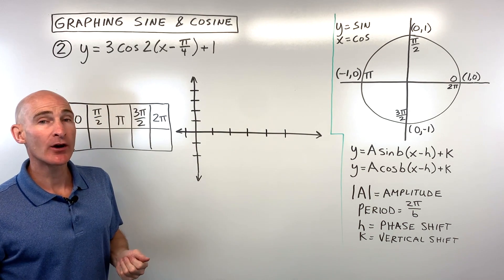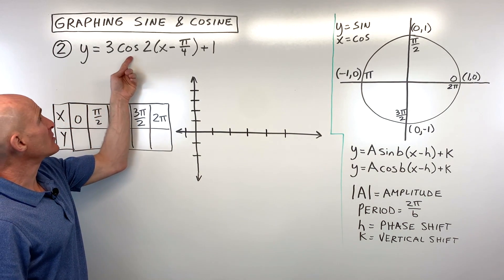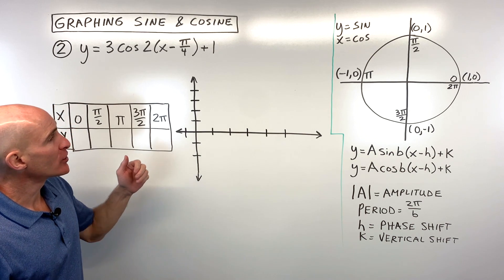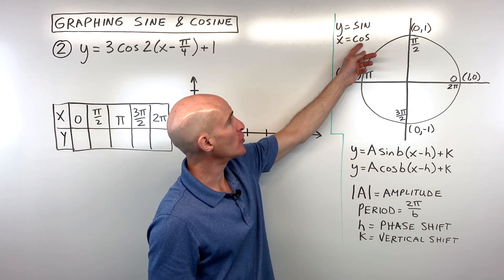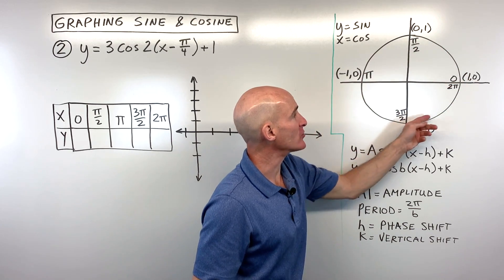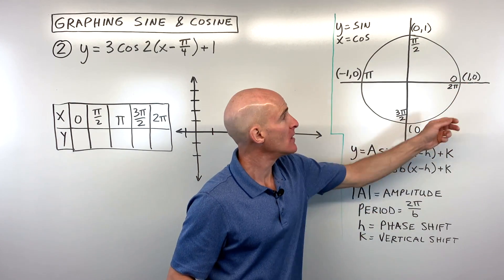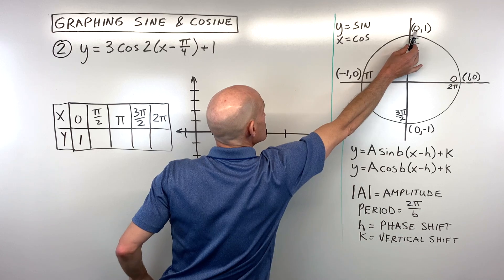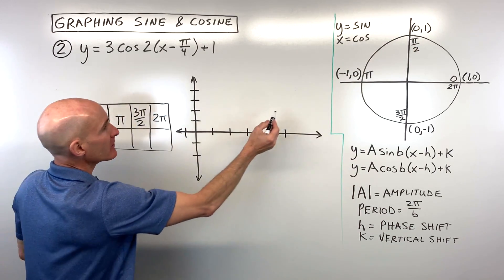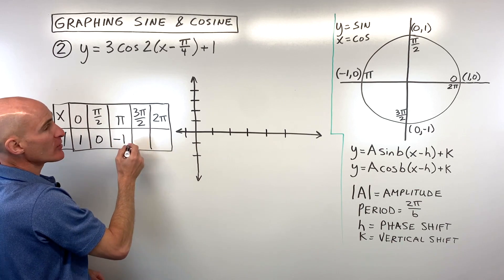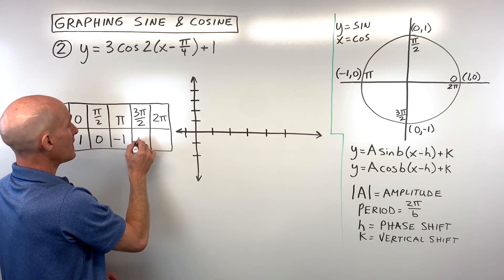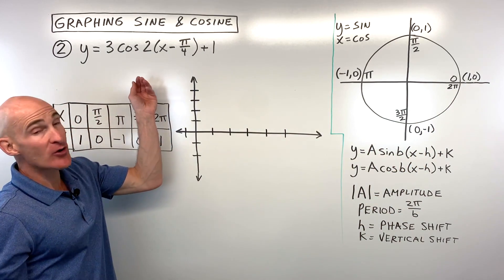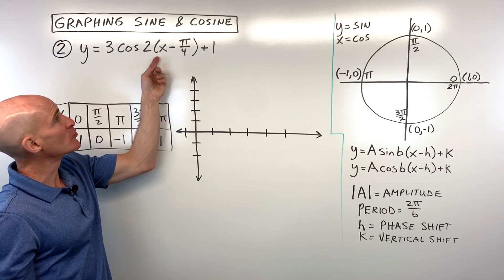For example number two we're going to look at a cosine graph: y equals 3·cos(2(x - π/4)) + 1. We go to our unit circle again, and because we're graphing cosine we know the x-coordinate at each angle represents the cosine value. At zero, cosine is one; at π/2, cosine is zero; at π, cosine is negative one; at 3π/2, cosine is zero; and at 2π, cosine is back to one.